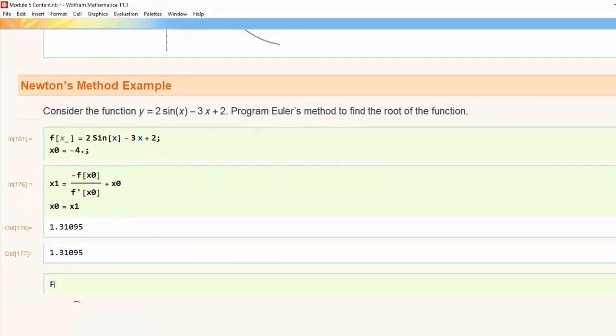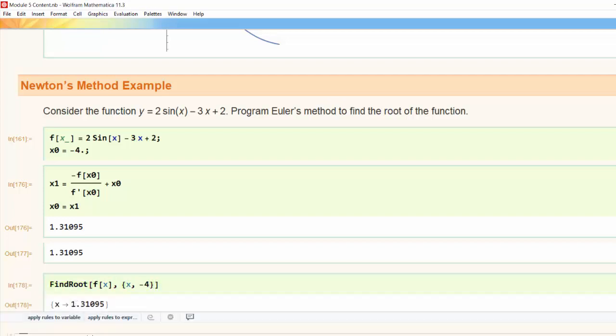I can verify that in Mathematica using the FindRoot command which does also use a numerical technique like Newton's but probably more advanced or more complicated. But in that case I could put in my function and put in my initial value of -4 as well and Mathematica returns that same value 1.31095.